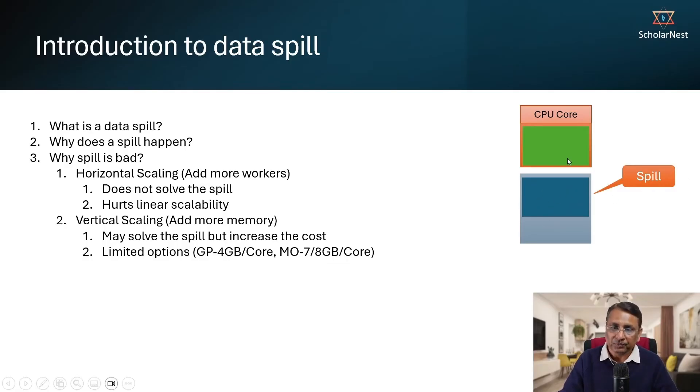And that's fine for now. So what a CPU will do? The CPU core will process this data, the first part, whatever is there in the memory. And once that is processed, it will again move it to disk and load whatever was there in the disk, whatever is not yet processed. And that happens, that is also a spill.